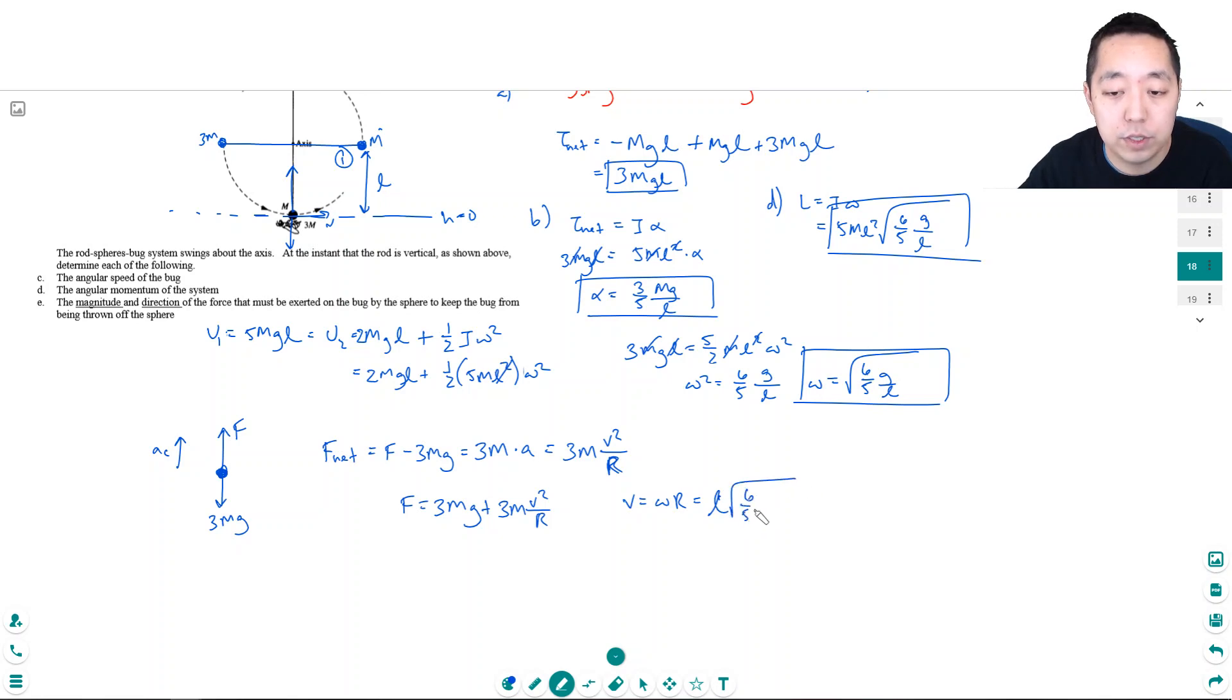So v squared would be l squared times six-fifths g over l. That will cancel, so that's equal to six-fifths gl.